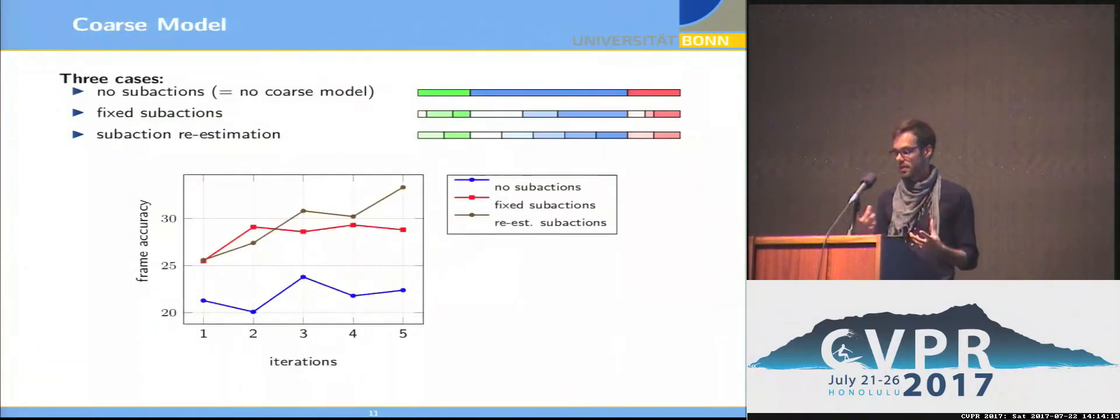So let's have a brief look at the coarse model. First case, we have no sub-action, meaning we have no coarse model at all. That means we directly have to model the actions. So the RNN has to take care of the complete temporal context, even of the very long actions. And as I already mentioned, it's not very good at this. You see it at the blue curve, the performance is quite poor. But as soon as we add these sub-actions, it gets much better.